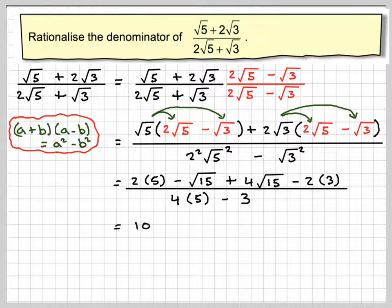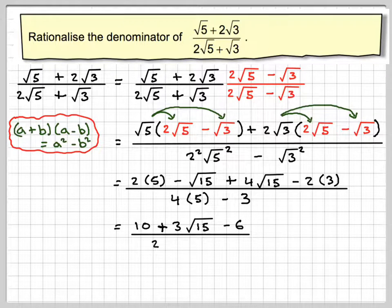2 times 5 is 10. We've got plus 3 lots of root 15, minus 6 over 20 minus 3.